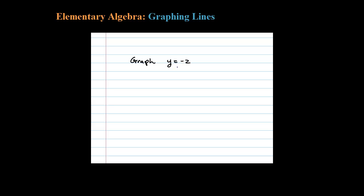Here we're asked to graph y equals negative 2. Now what we want to do is think of this as 0X minus 2. We're looking at slope-intercept form here.